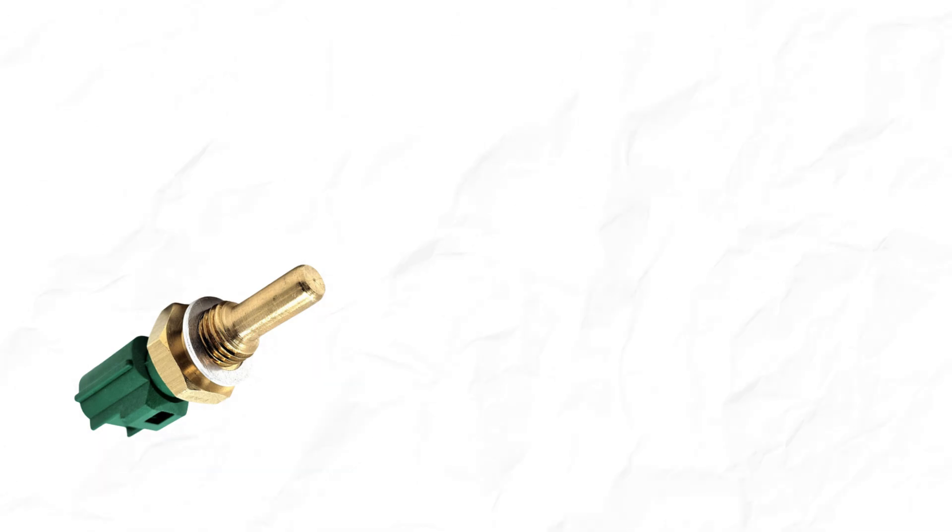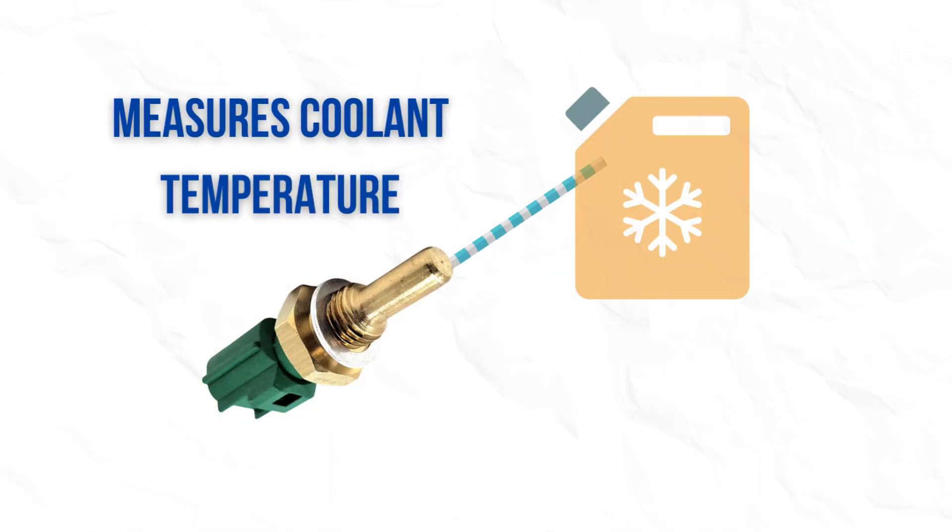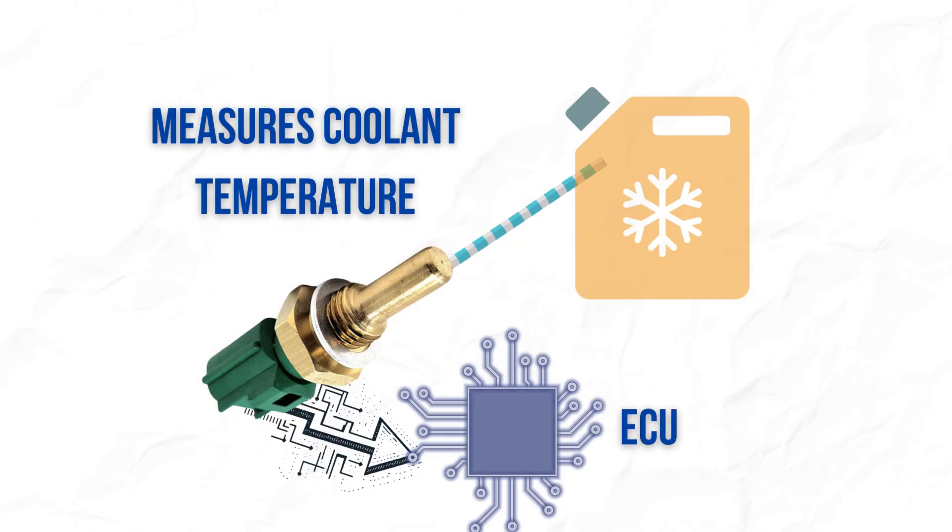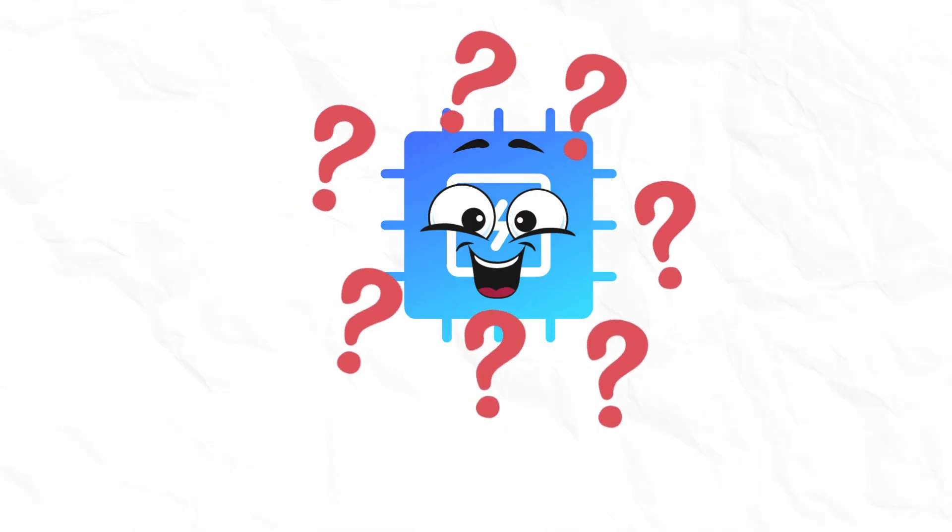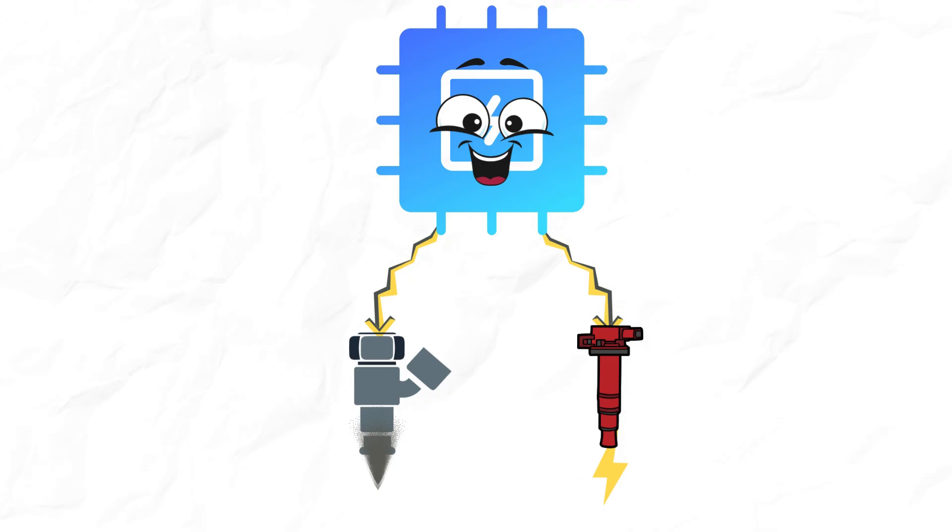The ECT sensor measures the temperature of the coolant in the engine's cooling system and relays that information to the engine control module. With this data, the ECU can adjust various engine parameters, such as fuel injection and ignition timing, to maintain optimal performance.